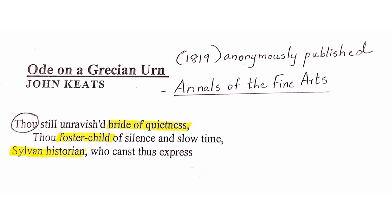Coming to the title of the poem: this is an ode. An ode is a poem that is addressed to a person or a thing, and here the poem is addressed to the Grecian urn. In earlier days, urns were containers in which the ashes of the dead were kept, and these urns would be decorated with beautiful pictures. Keats came across one such urn — a Grecian urn from Greece, possibly one of those associated with the Elgin Marbles articles.